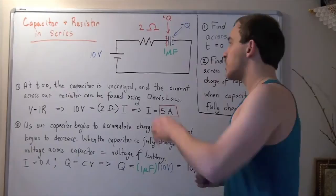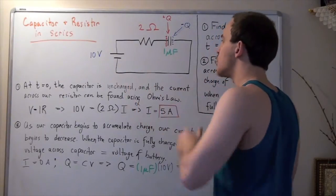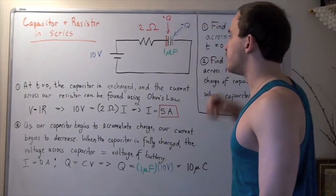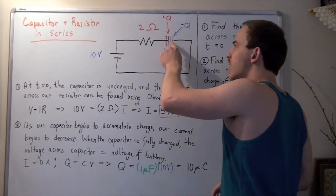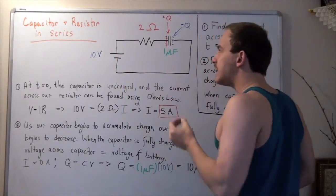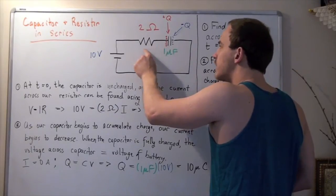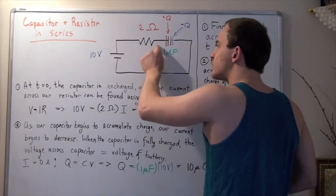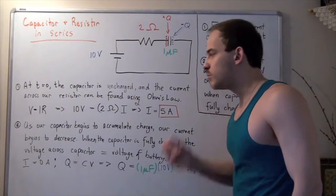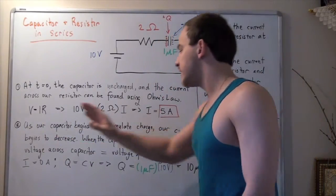What happens as our electrons reach our plate and begin to accumulate? As electrons begin to accumulate on this side, electrons begin leaving the other side and moving to our cathode. That means less and less electrons are moving through our resistor, and our current progressively becomes smaller and smaller. As our capacitor begins to accumulate charge, our current begins to decrease.